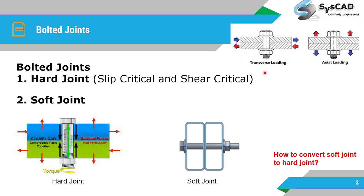We also have two types of loading: transverse loading and axial loading, and sometimes a mix of both. For simplicity we keep these two loadings separate. In the hard joint all mating parts are connected to each other with no space between parts. In the soft joint, between two tubes there is a void or space, meaning from the bolt head to the nut the part is not continuous.